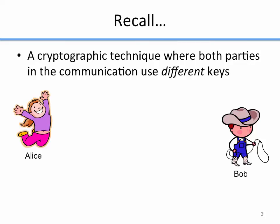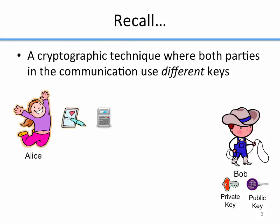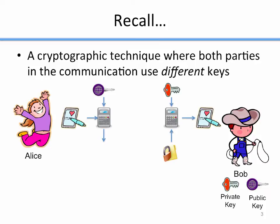Public key crypto is a cryptographic technique where both parties in the communication use different keys. For example, Bob has a private and a public key that he's generated on his own. His public key is known to the whole world, and his private key is known only to him. If Alice wants to send Bob a message, she encrypts it with his public key, producing the ciphertext, sends it to Bob, and Bob decrypts it with his private key to get back the original message. This is very different from symmetric key crypto where both people use the same key.